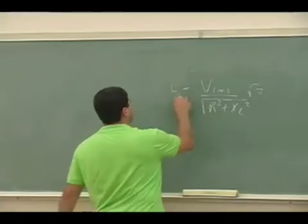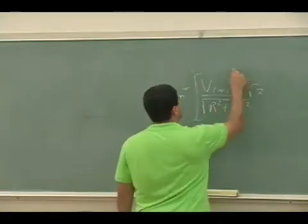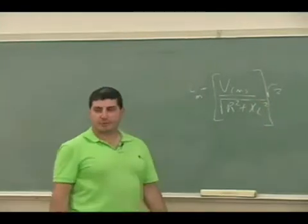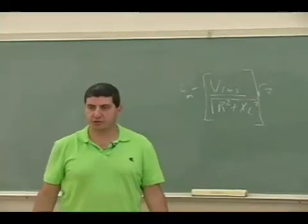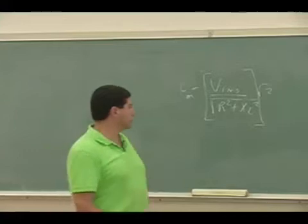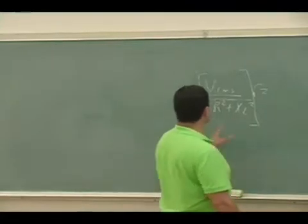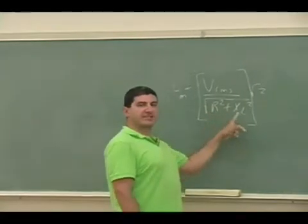Okay, this is the I max. So whatever this thing is, it represents what the ammeter will measure, the effective current in the circuit. Okay, so this is, you can think of this as the total resistance of the circuit.